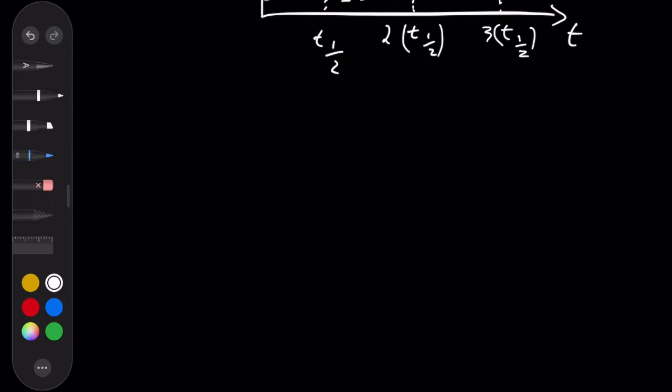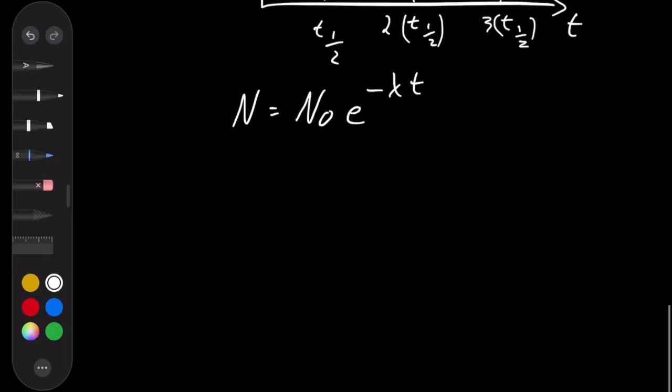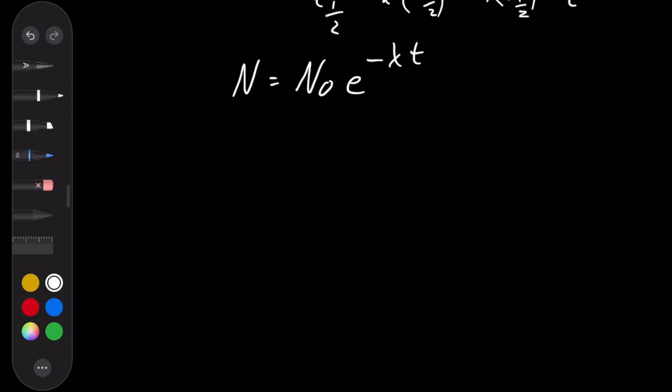We're going to start with the equation again, n equals n naught e to the minus lambda t. And we're going to say, let's imagine that this time is t a half, the half-life.